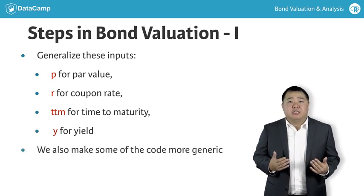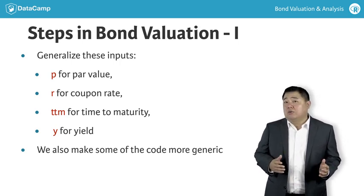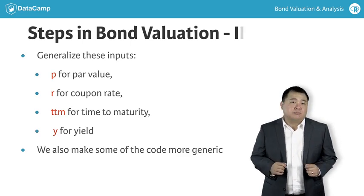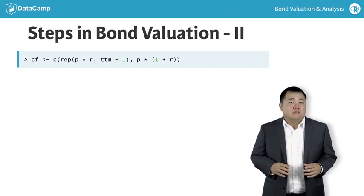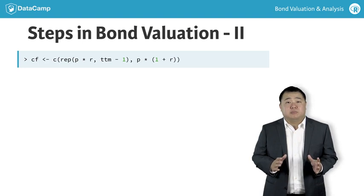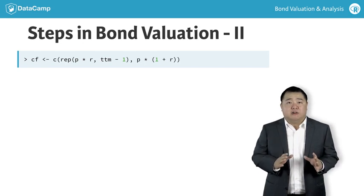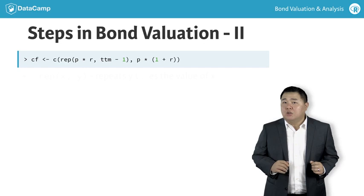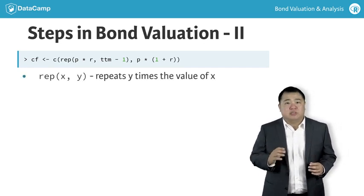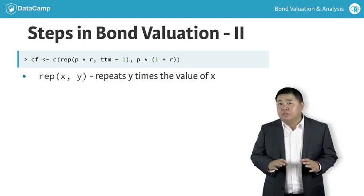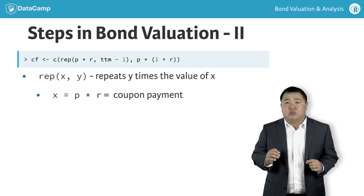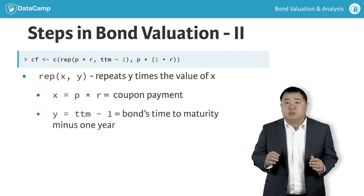The code is also modified to make some of the steps more generic. Now let's go through each of these steps to see what we changed. The first step is to construct a cash flow vector CF. For the cash flow vector CF, we need to allow the code to be flexible and generate the coupon payments and principal payment automatically, given the bond's par value, coupon rate, and time to maturity. We use the rep command, which takes two inputs X and Y, and basically repeats Y times the value of X. This fits how we model the coupon payments prior to maturity. So X is equal to the par value times the coupon rate, and Y is equal to the time to maturity minus 1.